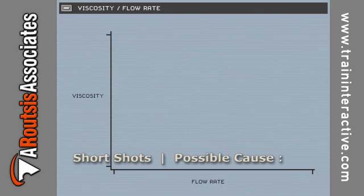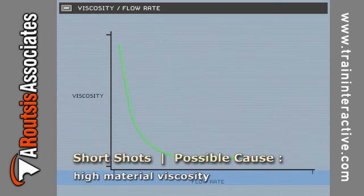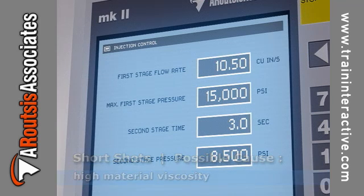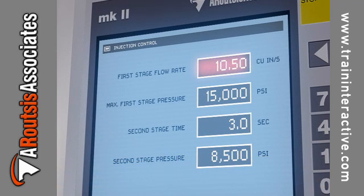A material viscosity that is too high during injection can also cause short shots. Decreasing material viscosity is done by increasing the injection flow rate or the material temperature.